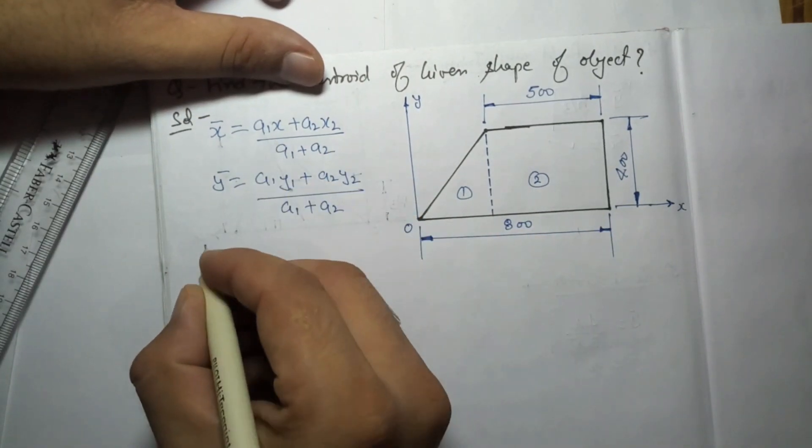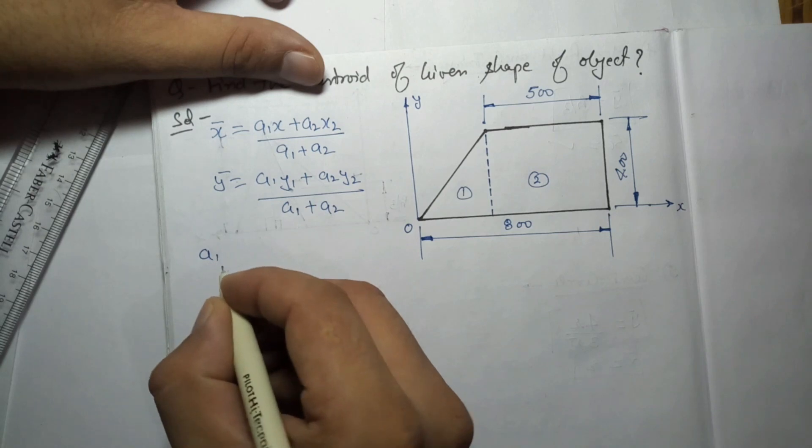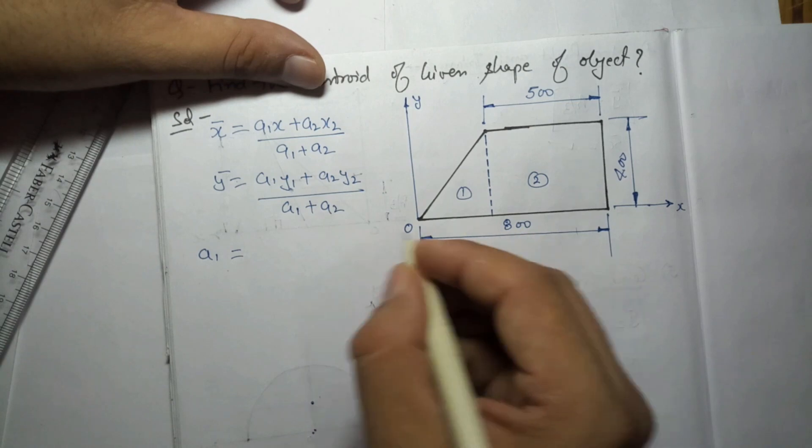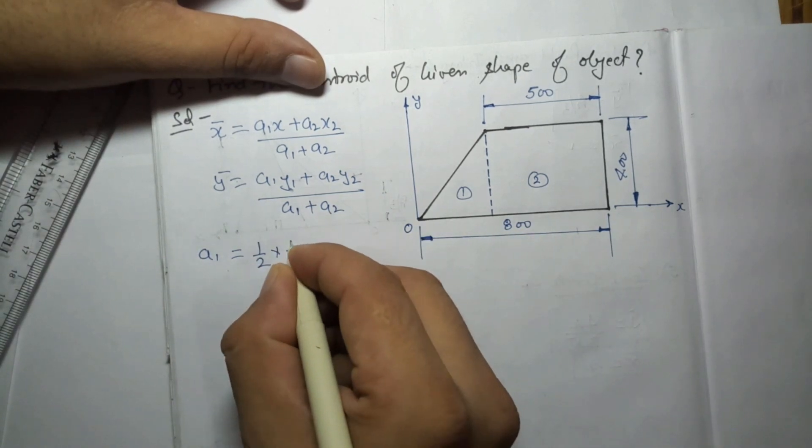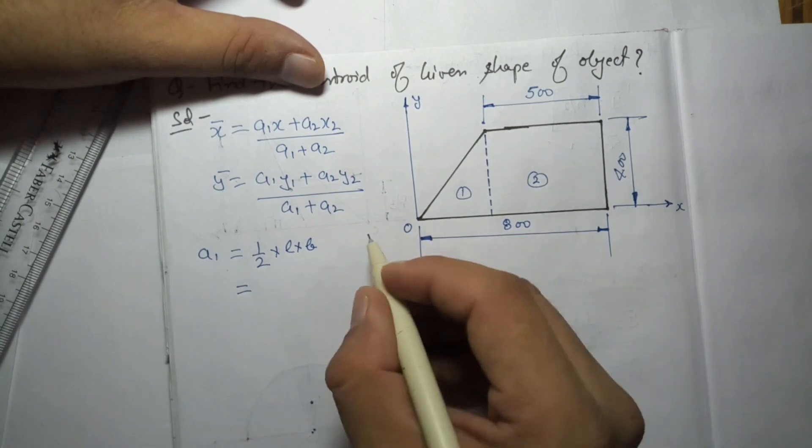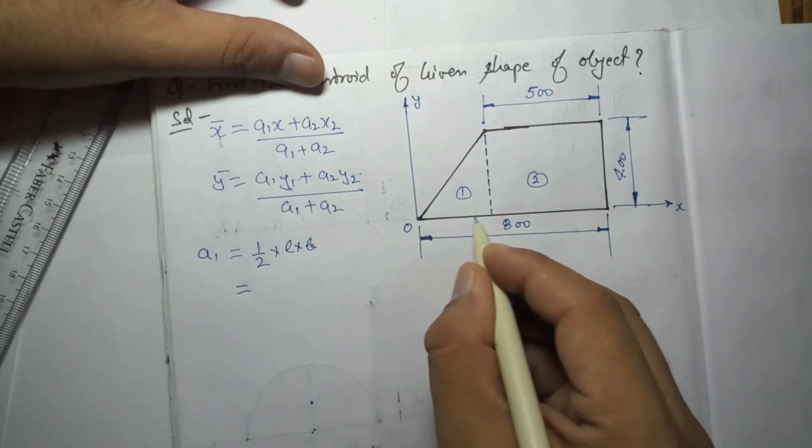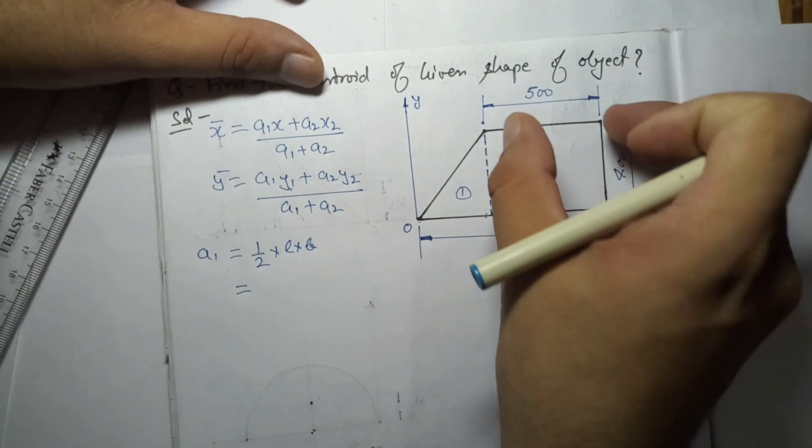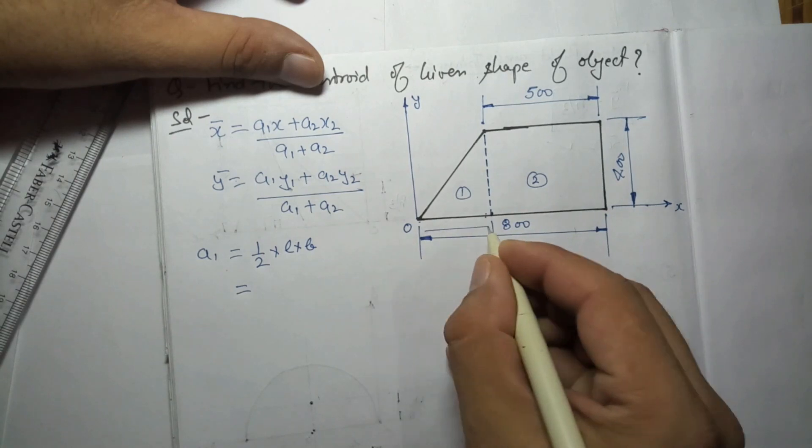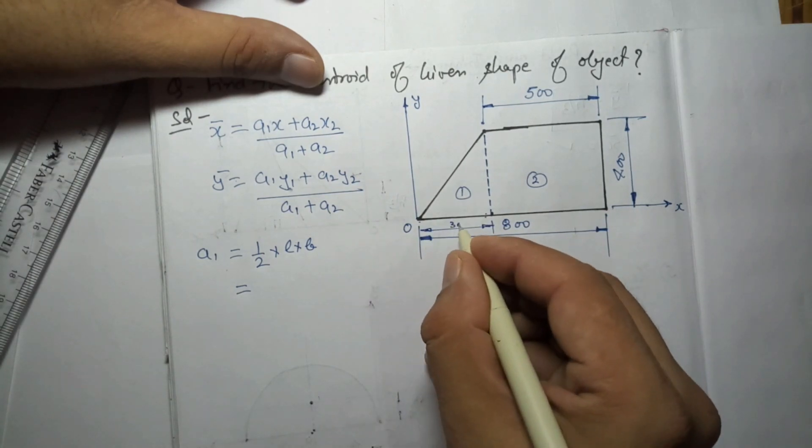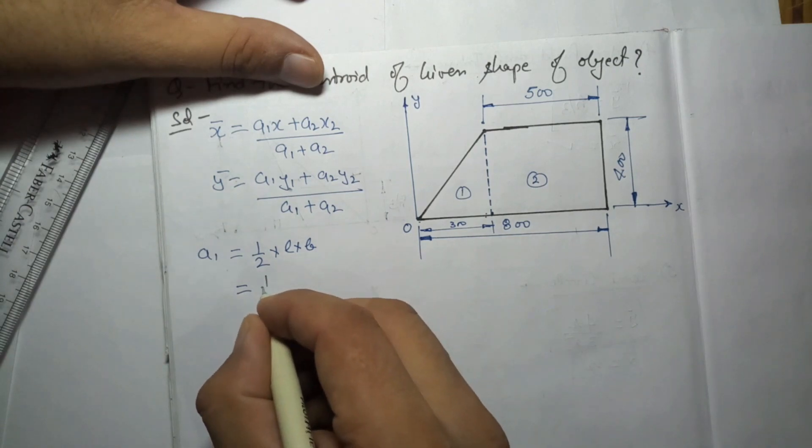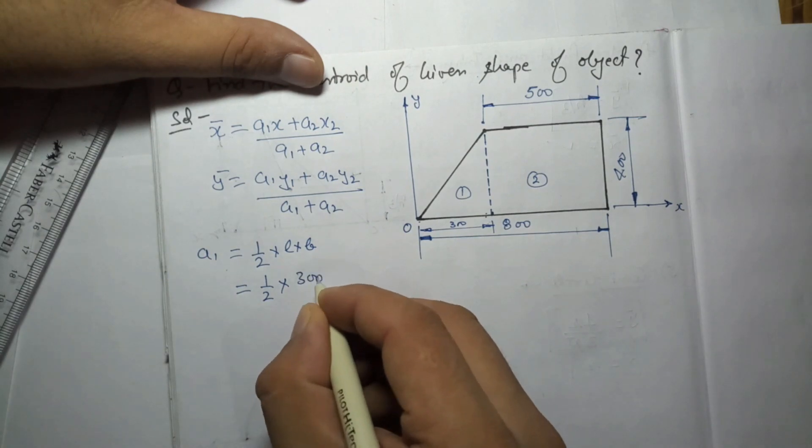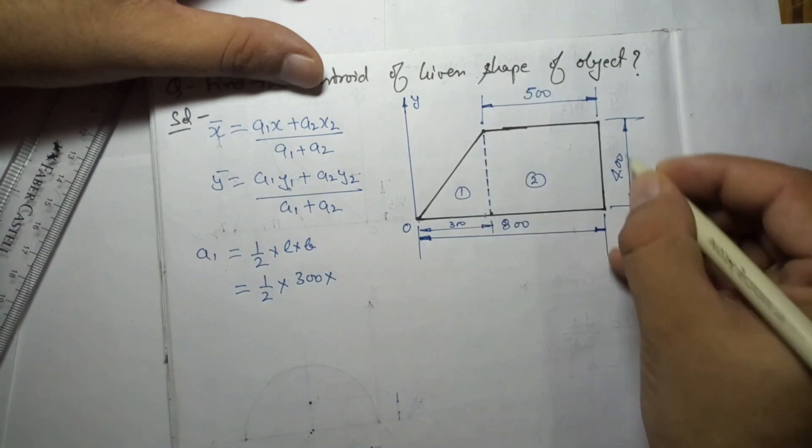It means we require A1 and A2 first. What is A1? It means area of this. Now this is a triangle, so area of triangle is equal to half of length into width. For this, it will be the width. How we can calculate this one? If this is 500 and this is 800, then 800 minus 500, so this will be 300. So it will be half into this width, which is 300, into what is the height given here - 400.